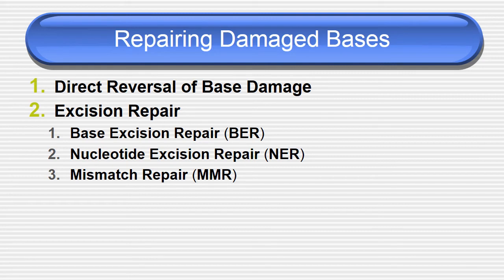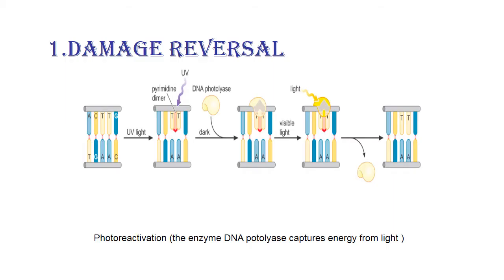Repairing damaged bases involves two different mechanisms: direct reversal of base damage and excision repair. In excision repair there are three types: base excision repair, nucleotide excision repair, and mismatch repair. Coming to damage reversal: UV light acts to damage the DNA, but visible light helps in reversing it — this is nothing but damage reversal. DNA polymerase acts, and with the help of visible light, photo-reactivation with the enzyme DNA photolyase captures energy from light and converts damaged DNA back to normal.